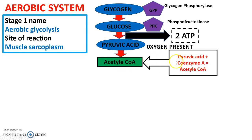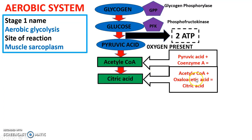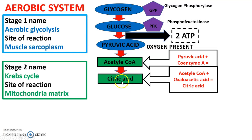From this point, acetyl-CoA is going to combine with oxaloacetic acid, and this leads to citric acid — which is absolutely vital, because citric acid is what takes us into the next stage, called the Krebs cycle. Citric acid is now in a position to enter the Krebs cycle.